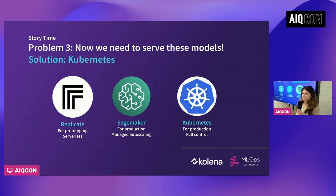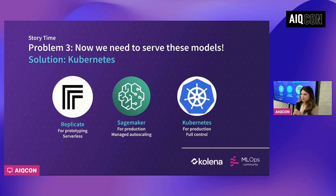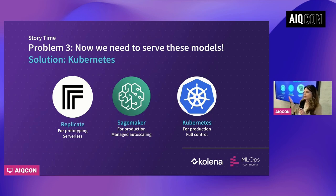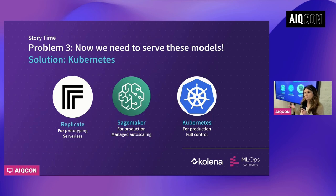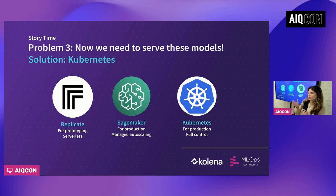Once we train hundreds of models, the next challenge is how do we serve them — how do we make them readily available so that whenever someone wants to generate an image in the style of Tesla, they can do so in a few seconds? We started with the most obvious solution: a serverless solution. You go to Replicate, put your model there, and they give you back an API — whenever you hit that API, you get an image back. This works great for prototyping and getting something running, but you very quickly run into problems when dealing with such a big scale of models. The biggest one is the cold start problem. There's some time required to take the adapter module from disk and bring it into GPU, and sometimes with Replicate this could take even up to two minutes — just prohibitively expensive.